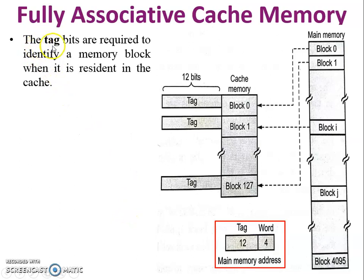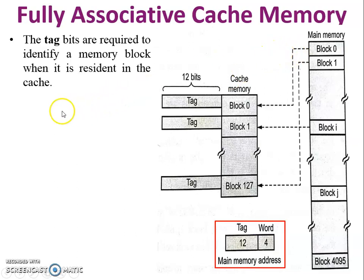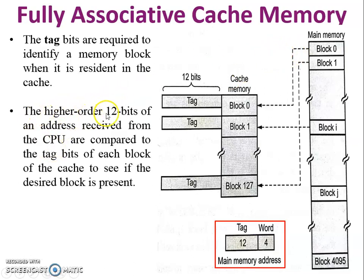The first field is the tag field. The tag bits are required to identify a memory block when it is resident in the cache. If any block comes from main memory to cache memory, we can identify it using the tag field. The tag field consists of the first 12 bits of the block address.